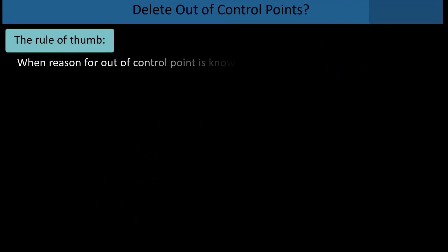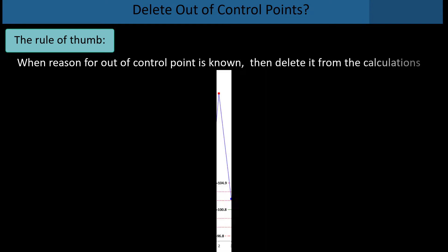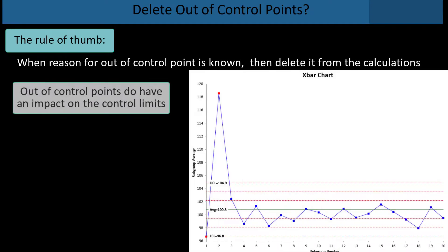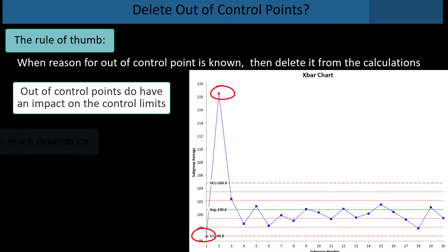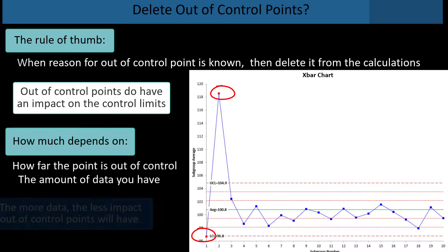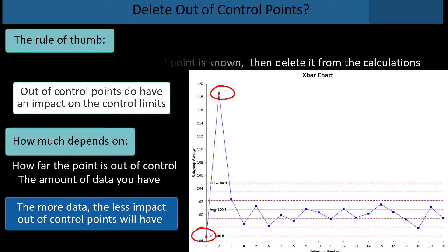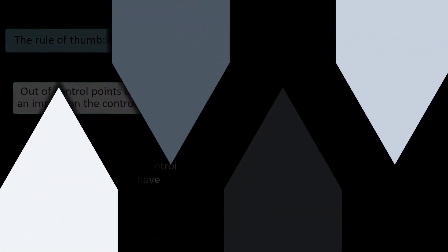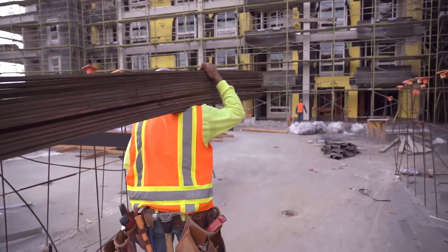Should I delete out of control points? Rule of thumb I follow is when reason for out of control points known, delete it from the calculations. They do have an impact on the control limits. But the size of that impact depends on how far out of control that point is and the amount of data you have. The more data you have, the less impact out of control points will have.